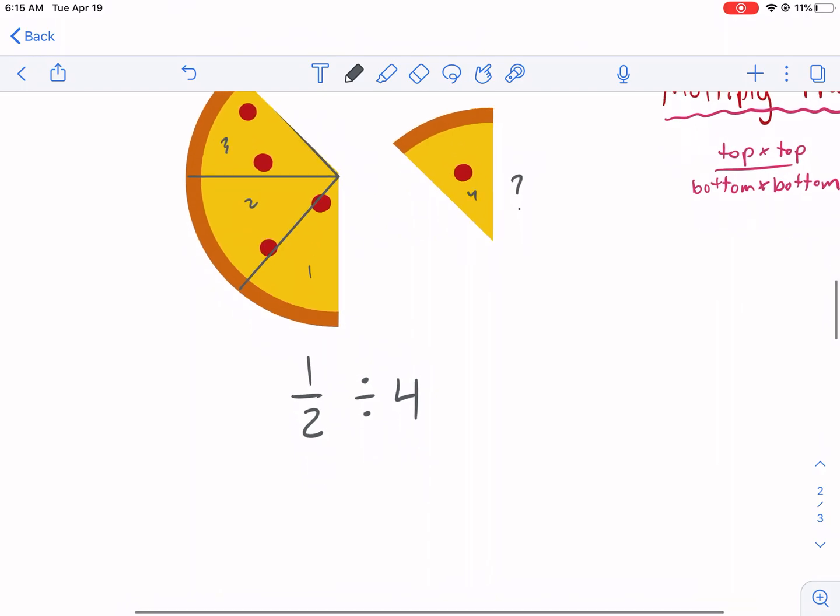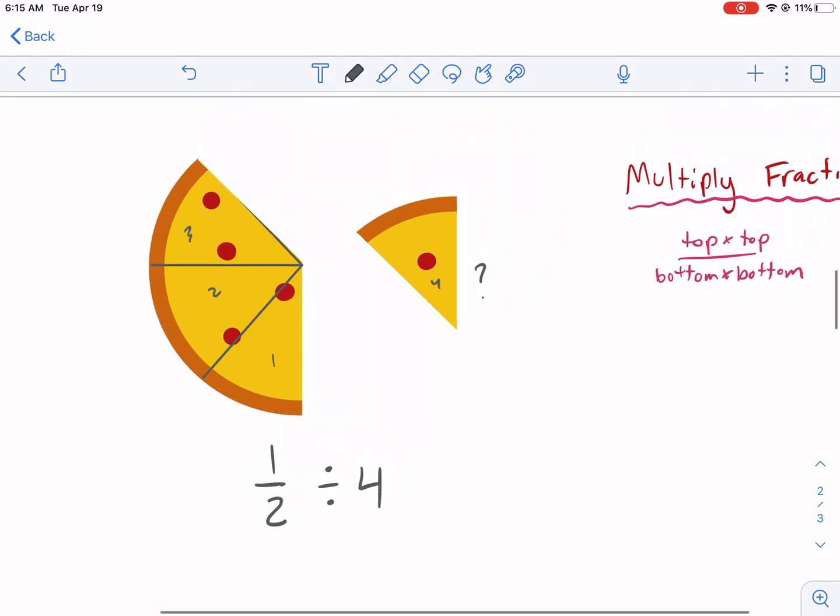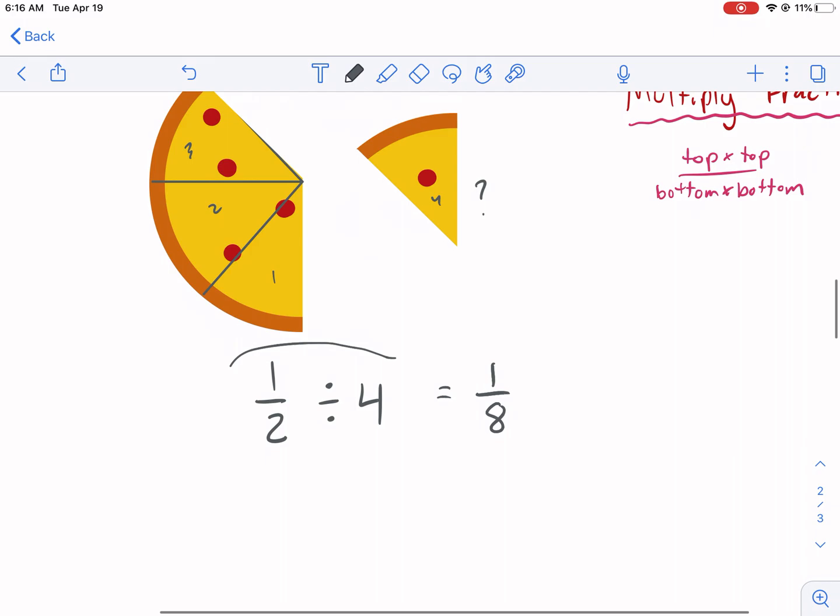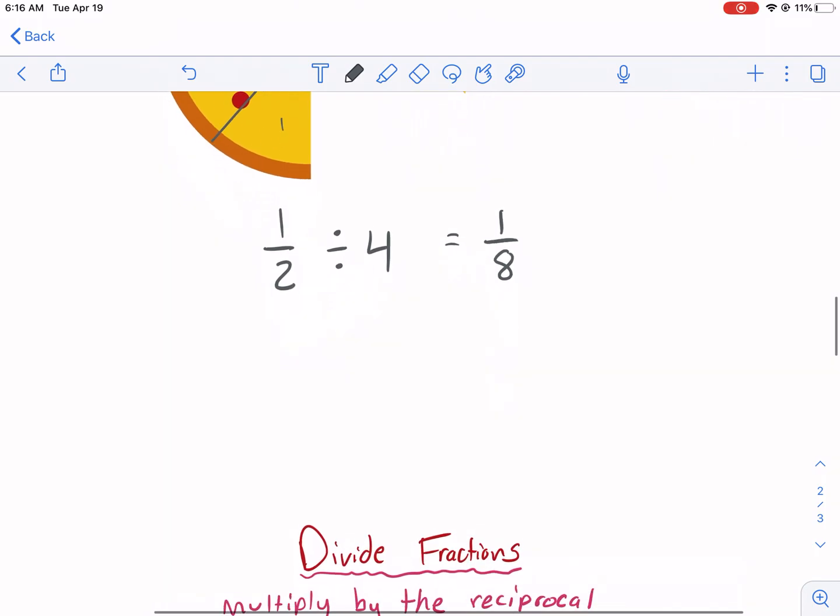Well, we need some help in order to do this. If you look at this slice, we can visualize and see that this is one eighth of a pizza. But how do you do that from this? Well, the easiest way to do this problem is to change it into a multiplication problem.